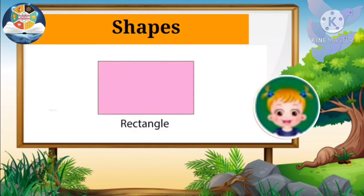Rectangle. This is a rectangle. It also has four sides and four corners, but in a rectangle, only opposite sides are equal.